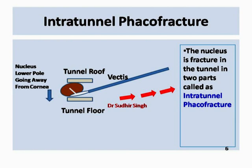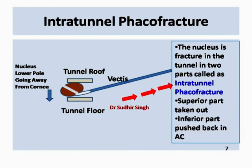The broken posterior part of the nucleus is taken out and the remaining anterior part is pushed back into the anterior chamber. The longitudinal axis of the remaining nucleus is made parallel to the tunnel and taken out by the vectus.